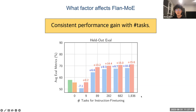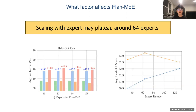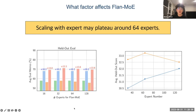Another scaling factor is the number of experts. We tried scaling that as well for a base model. Scaling with more experts means more parameters and more proneness to overfitting. We observed that when you scale the number of experts, performance may plateau around 64 experts and won't improve much after that.